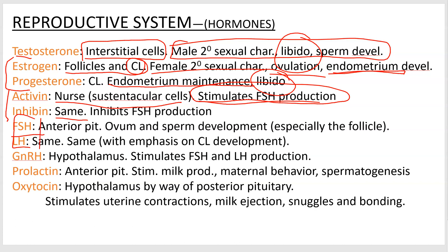Follicle-stimulating hormone (FSH) and luteinizing hormone (LH) — you have to know their names. They're made in the anterior pituitary. They both help develop gametes — FSH deals with the follicle, and luteinizing hormone deals with the corpus luteum, but generally you could say egg and sperm development. Gonadotropin-releasing hormone is produced in the hypothalamus and acts on the anterior pituitary to cause it to produce and release its hormones.